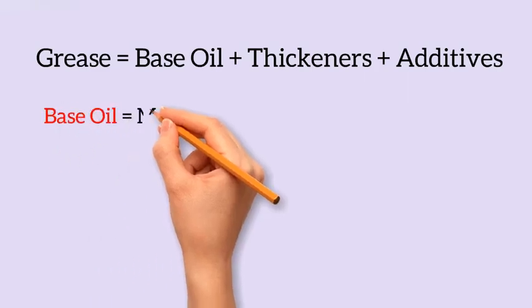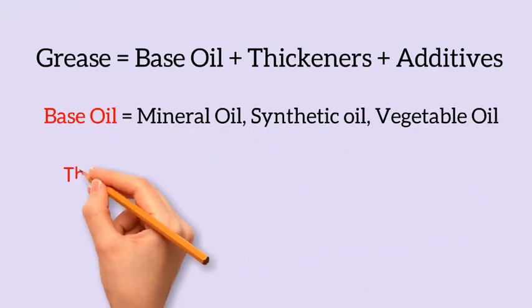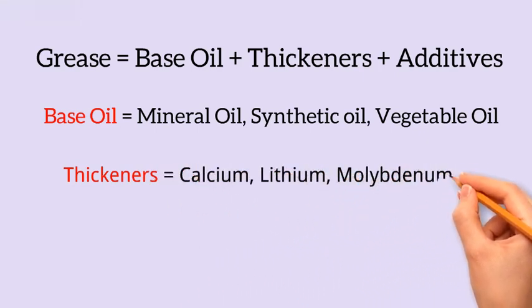Base oil can be mineral oil, synthetic oil, or vegetable oil. Thickeners are soaps of calcium, lithium, molybdenum, etc. Thickener is a very important part of grease. Thickeners hold the base oil, which is why grease looks semi-solid.